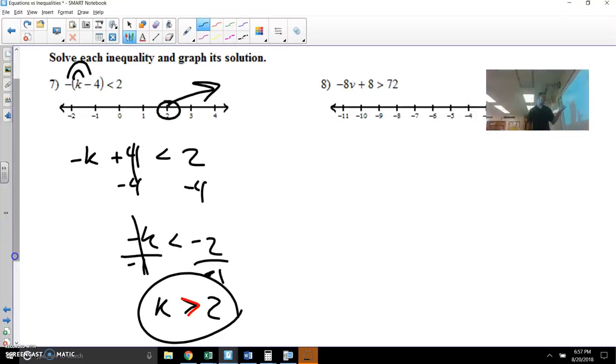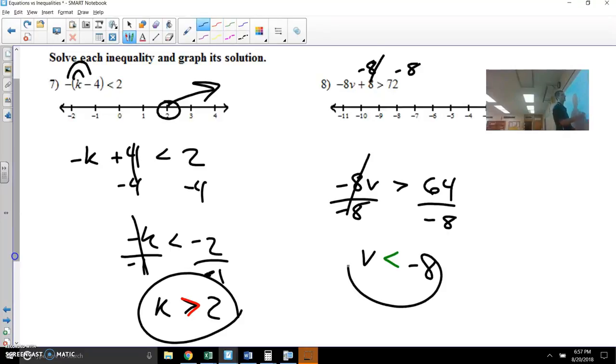All right. This next one is a little two-stepper because it's going to take you two steps to get this going. 72 minus 8 is 64. And once again, we're going to divide by negative 8. And that's going to flip the sign to make negative 8. So let's go to the number line. Let's find negative 8. Again, it's going to be open because it's not or equal. And it's going left.